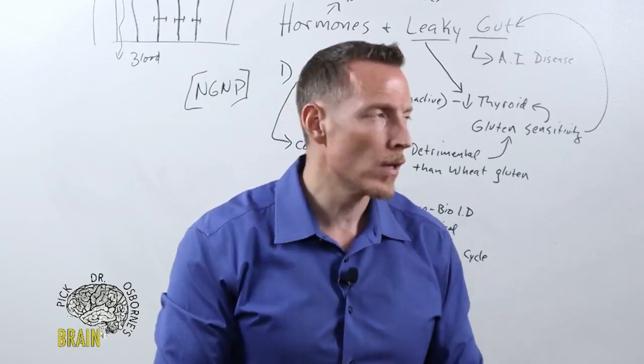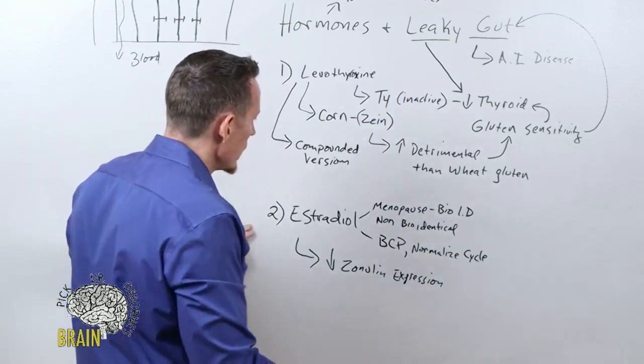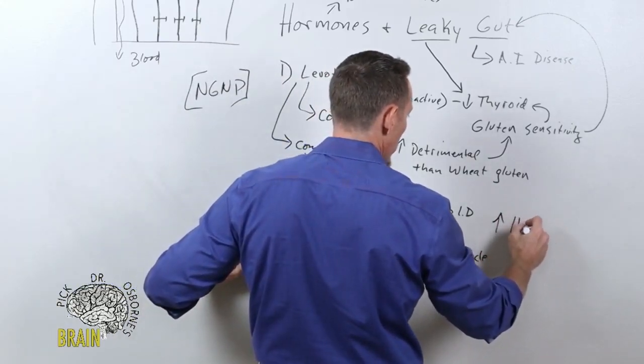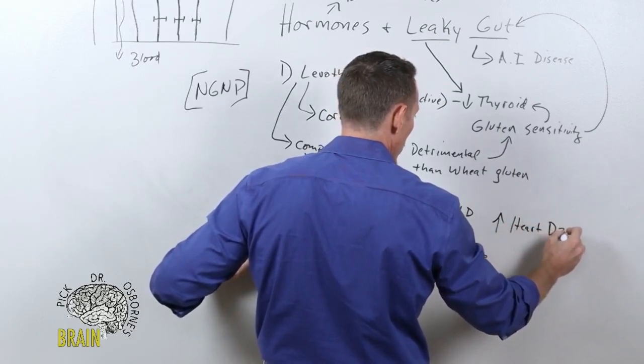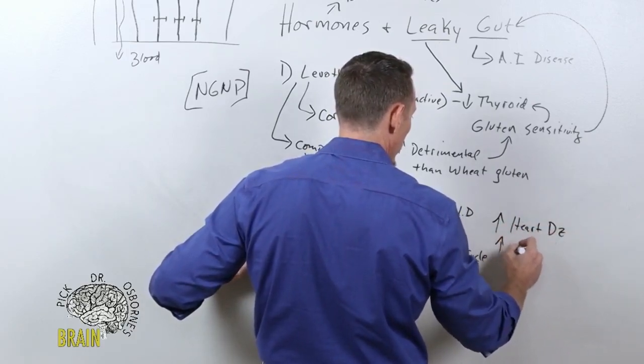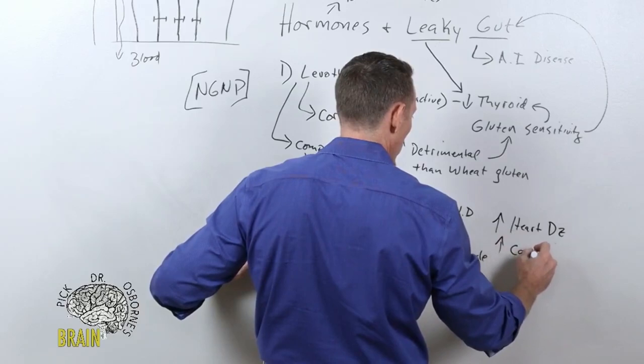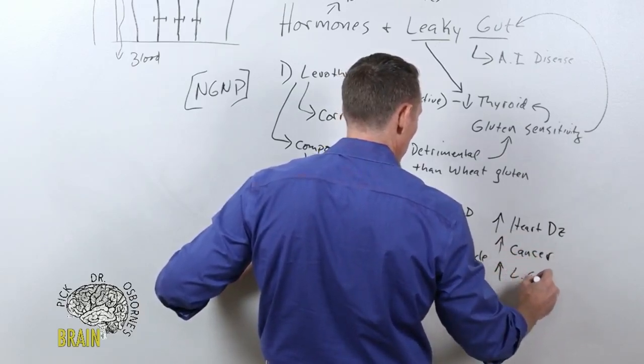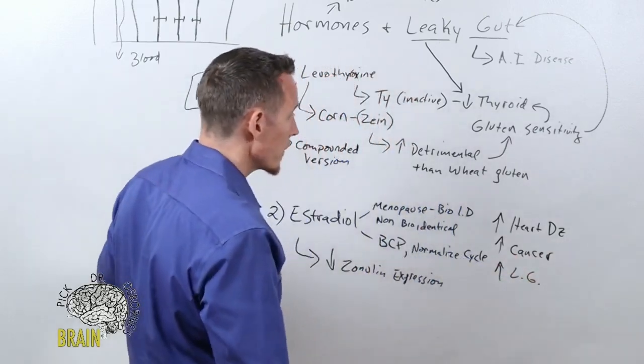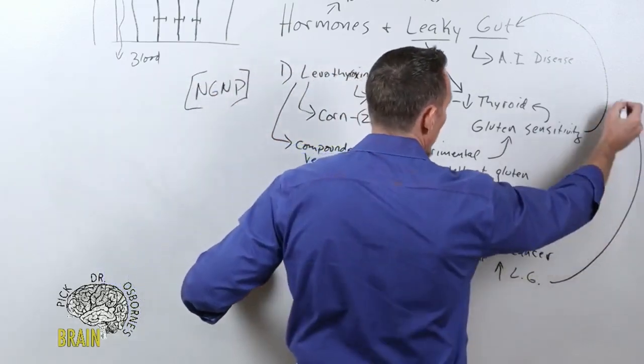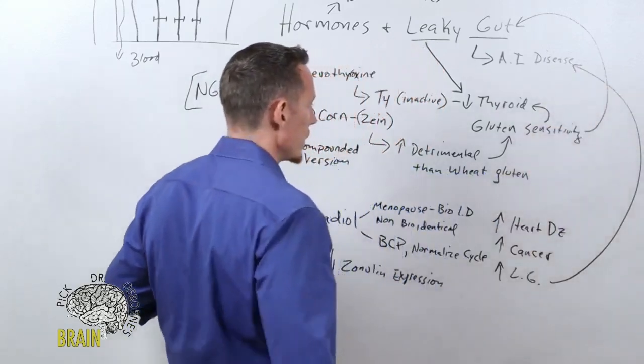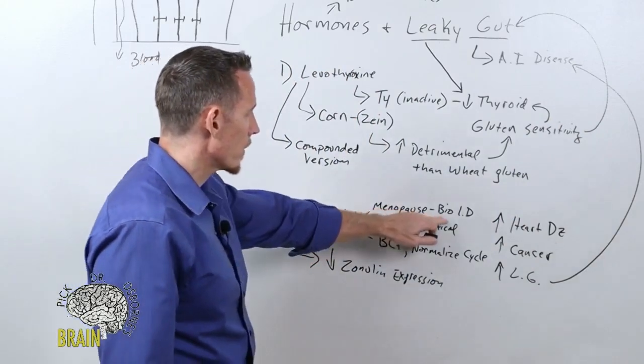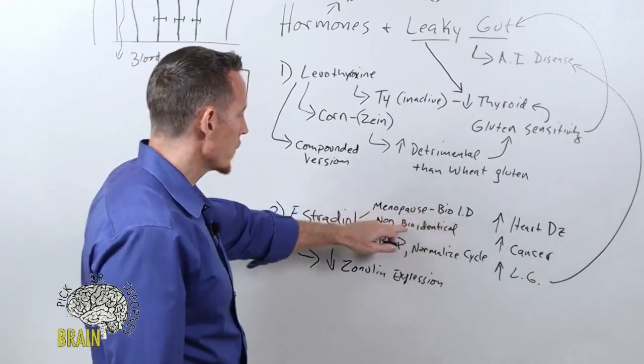This increases your risk for the development of autoimmune disease. We already know that estrogens will increase your risk for heart disease. We also know it will increase your risk for cancer. Now we're saying that it increases your risk for leaky gut and subsequently autoimmune disease.